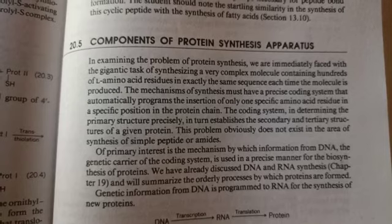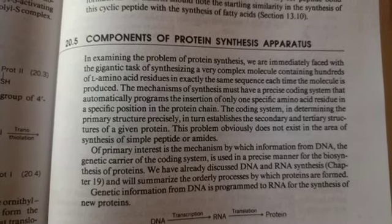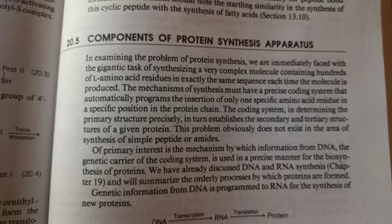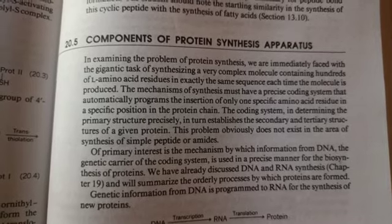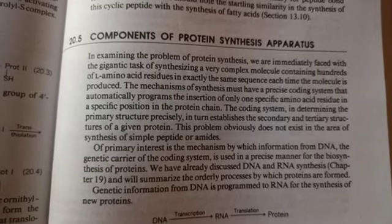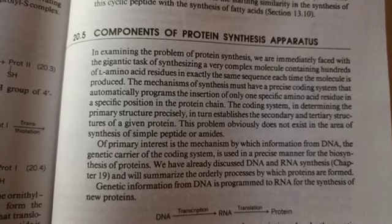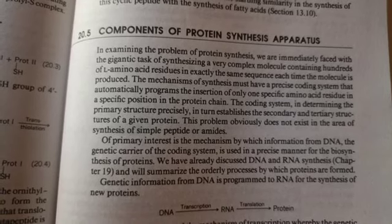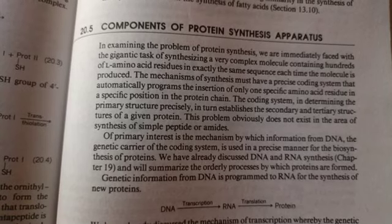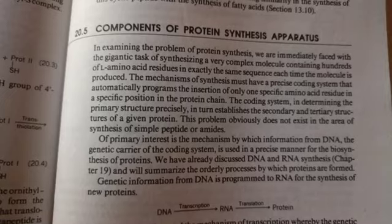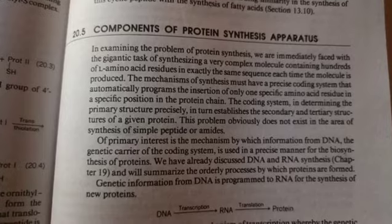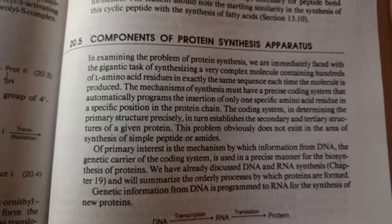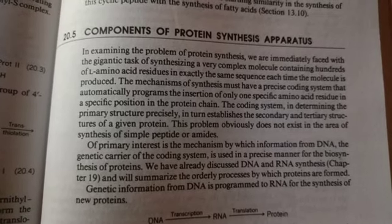The machinery of protein synthesis consists of a large number of components including mRNA, ribosomes which are the actual sites of protein synthesis, aminoacyl-tRNAs, and a number of enzymes, co-factors, and energy-rich compounds. The whole machinery operates in the cytoplasm of prokaryotic and eukaryotic organisms. In eukaryotes, it can be tightly associated with the endoplasmic reticulum. Mitochondria and chloroplasts also have the complete machinery for protein synthesis, except for a more limited set of mRNAs and proteins.